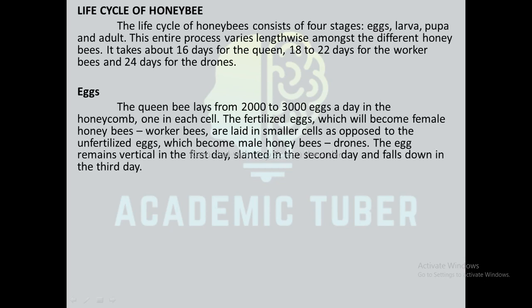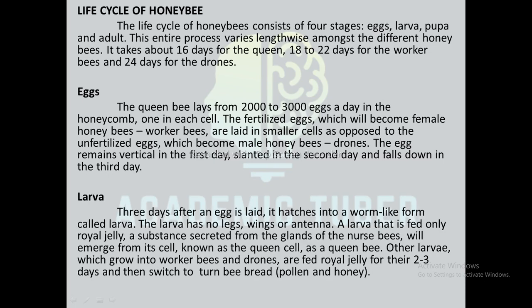The egg is the first stage of the life cycle of the honey bee. The queen lays from 2,000 to 3,000 eggs a day in the honeycomb, one in each cell. The fertilized eggs, which will become female honey bees (worker bees), are laid in smaller cells, as opposed to the unfertilized eggs, which become male honey bees (drones). The egg remains vertical on the first day, tilted on the second day, and falls down on the third day.